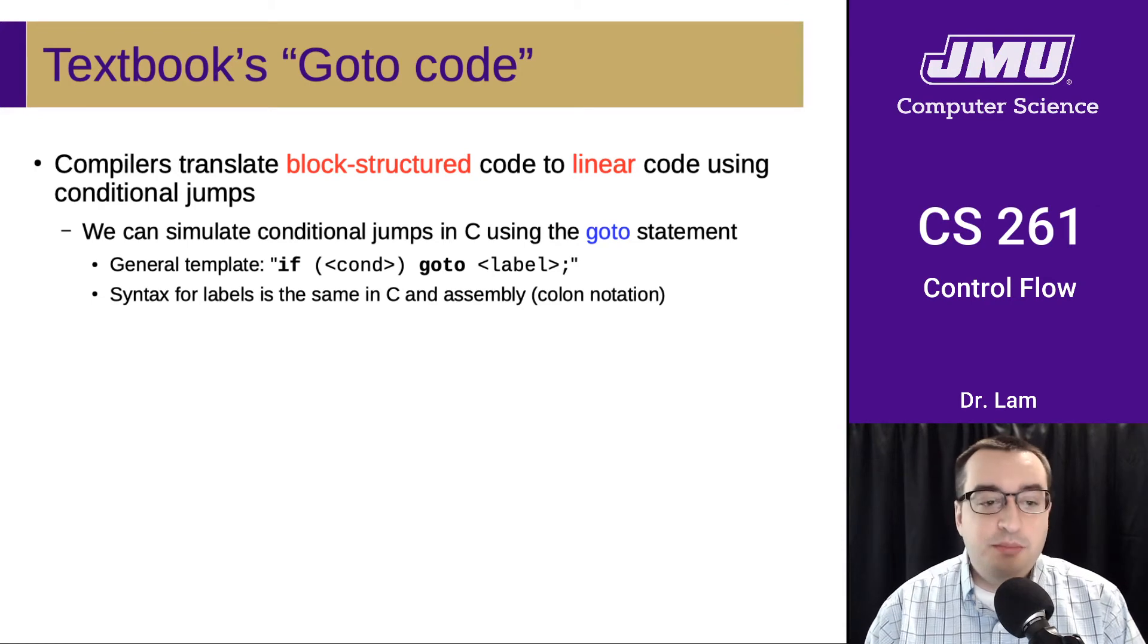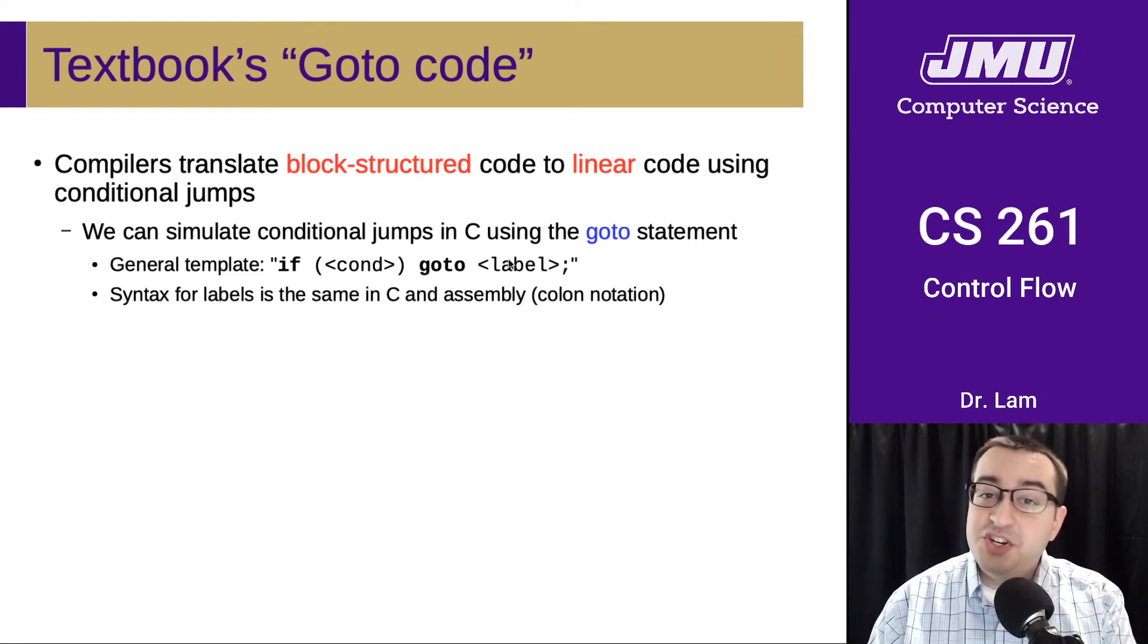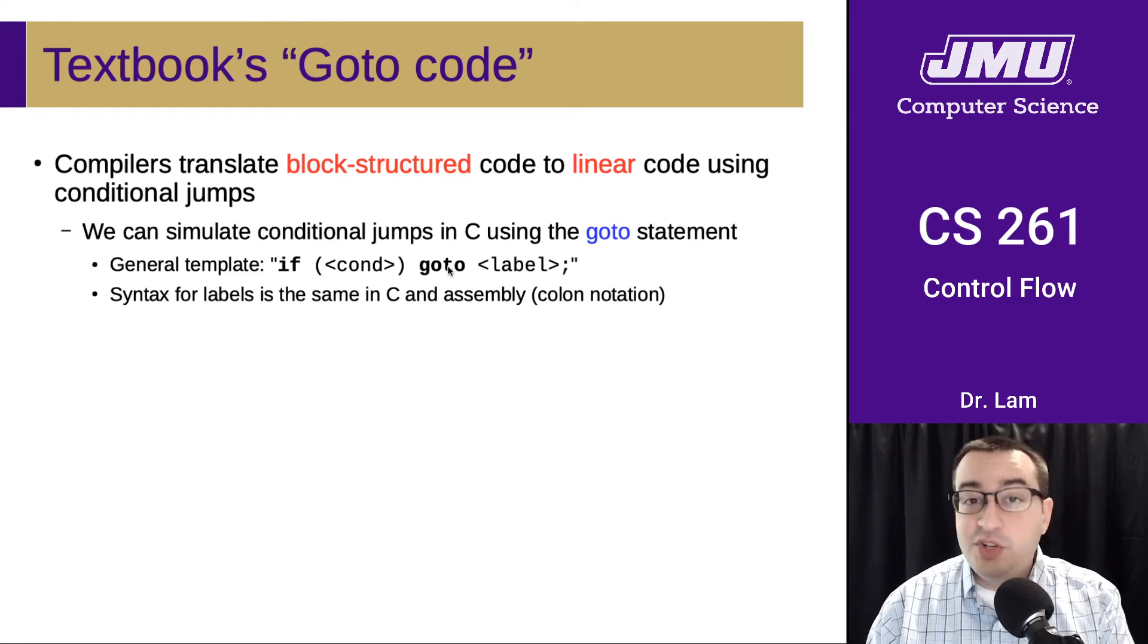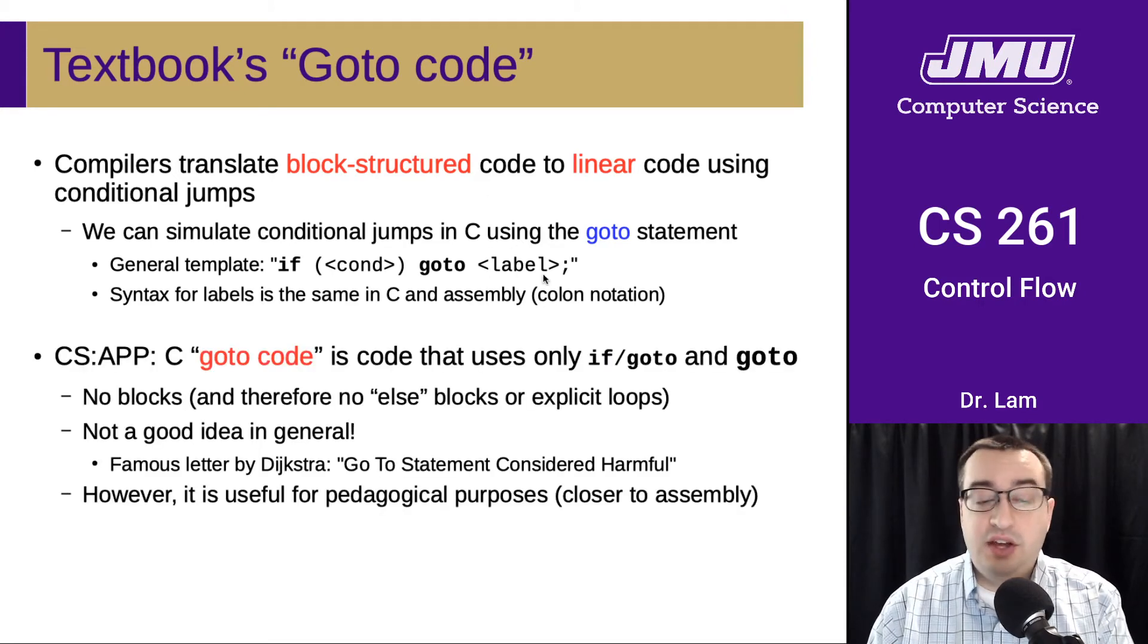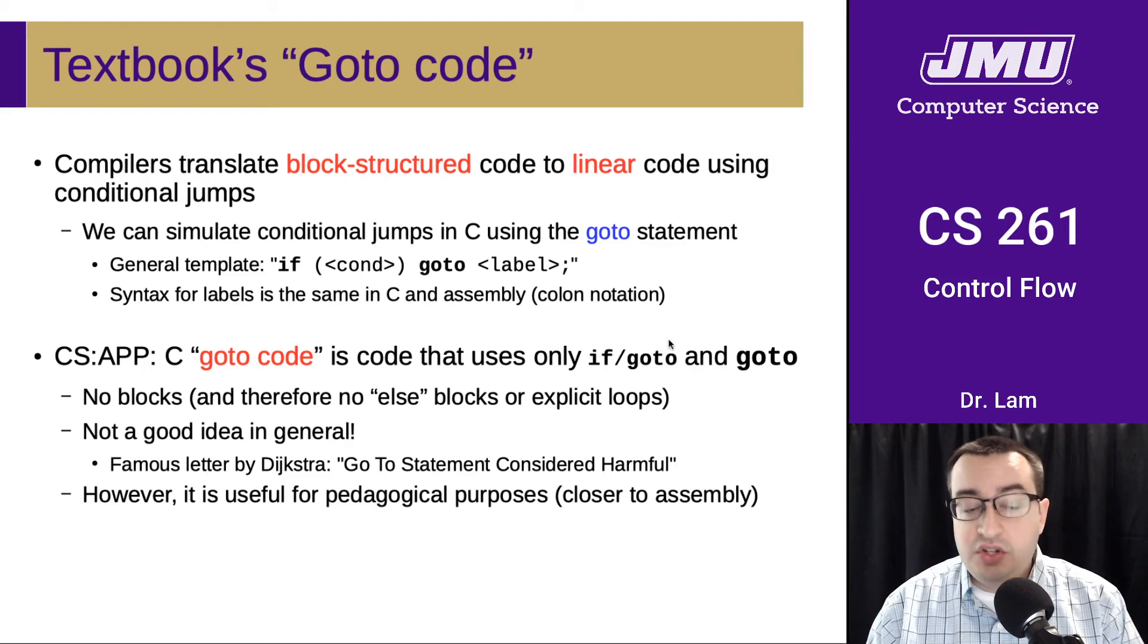We can simulate these conditional jumps in C using something called a goto statement. The general template here is: if some condition is true, goto a label. It turns out that C actually has the goto instruction and labels just like assembly. We haven't used them yet, but they actually exist. Your textbook defines this goto code as being code that only uses if-goto and goto. So there are no blocks anymore.